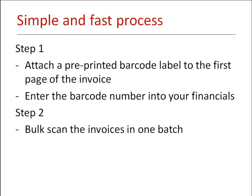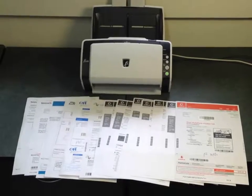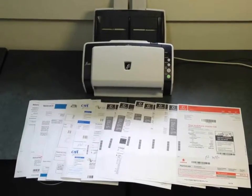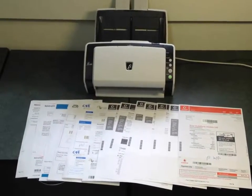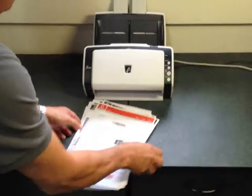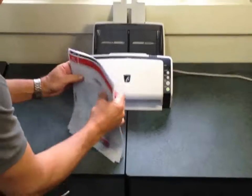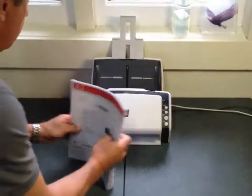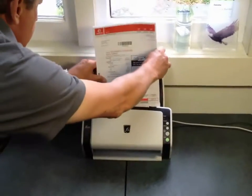Step two is scanning the invoices. The scanning process couldn't be simpler. You scan the entire batch of invoices in one go on any scanning machine, including copier scanners. The scanning operator doesn't need to know anything about it — they just scan them.